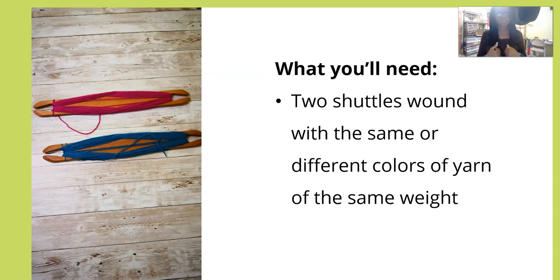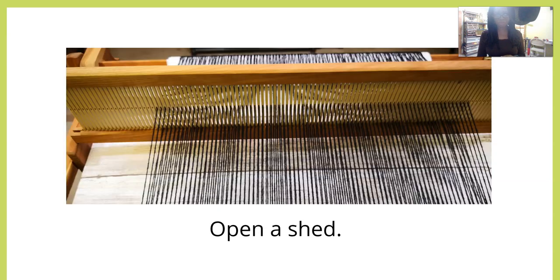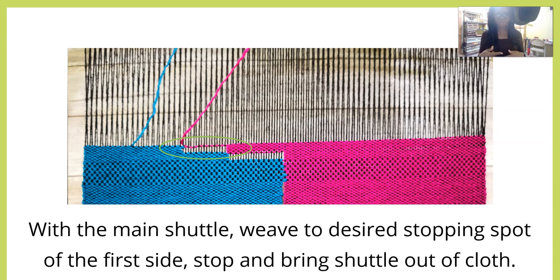What you're going to need: again, two shuttles wound with the same or different color yarns of the same weight. Decide where you want your window to be. You can see that I've left a bit of space between the beginning and ending of the area where I'm going to put my little window. Open your shed and weave with the main shuttle to the desired spot, stopping on the first side and bringing the shuttle out of the cloth.